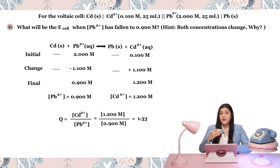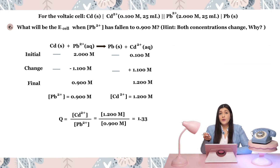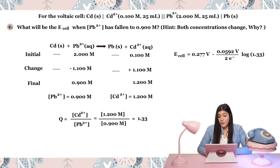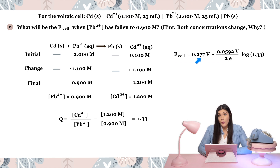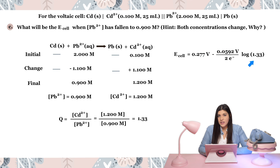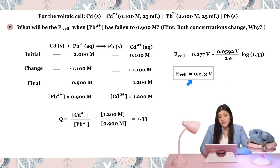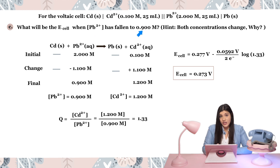Now I plug Q = 1.33 into the Nernst equation. The only thing that changed was Q — the number of electrons is still two. Plugging in the standard cell potential given in Part A and doing the same math as before, this gives us the E of the cell when the lead concentration has fallen to 0.9 molar.